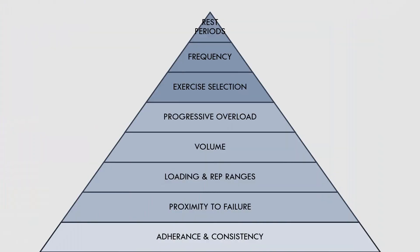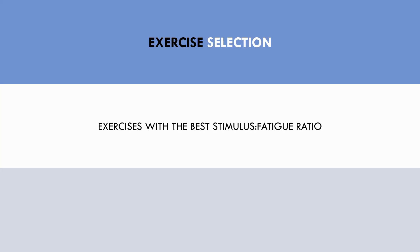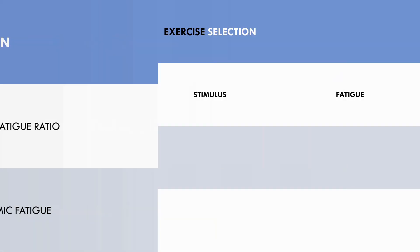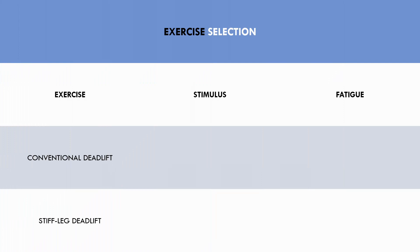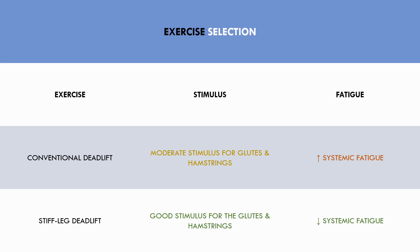The first of the secondary variables is exercise selection. Simply put, we want to make sure the exercises chosen are effective at targeting the muscle group we are trying to grow. We generally want to use exercises which have the best stimulus-to-fatigue ratio — referring to exercises that give us the most hypertrophy stimulus for a muscle group with the least systemic fatigue. For example, comparing a conventional deadlift with a stiff leg deadlift: a conventional deadlift trains the glutes and hamstrings but also involves many other muscle groups and is quite taxing on the nervous system. A stiff leg deadlift, on the other hand, trains the glutes and hamstrings through a larger range of motion using less load. This means a trainee will probably get greater hamstring and glute growth from stiff leg deadlifts with less systemic fatigue — in other words, a better stimulus-to-fatigue ratio.